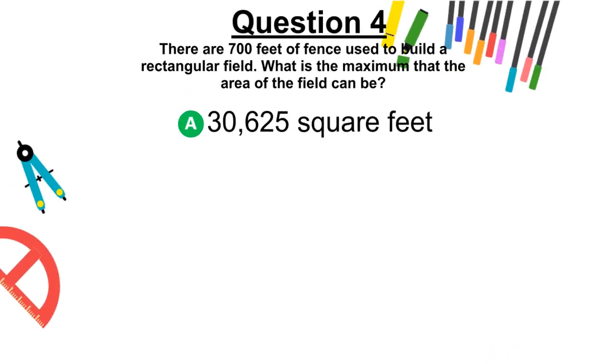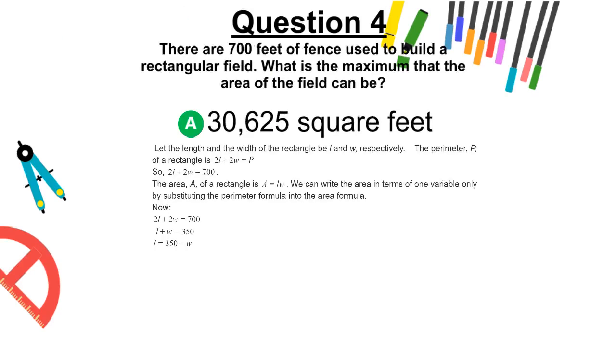The correct answer is A, 30,625 square feet. Let the length and the width of the rectangle be l and w, respectively. The perimeter, P, of a rectangle is 2l + 2w = P.